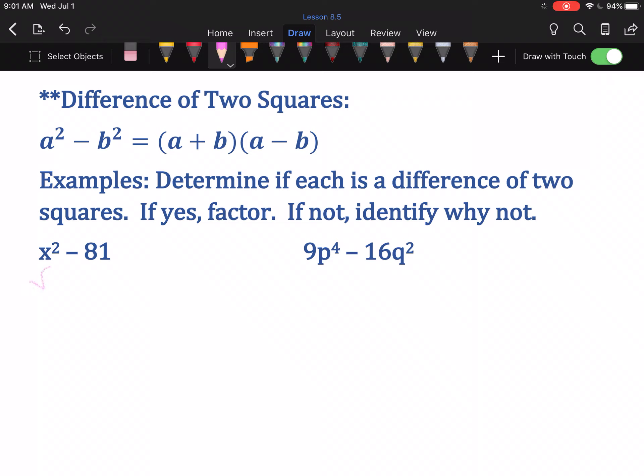Let me show you. Square root of x² is x. Square root of 81 is 9. That means this is (x + 9)(x - 9). That's it.